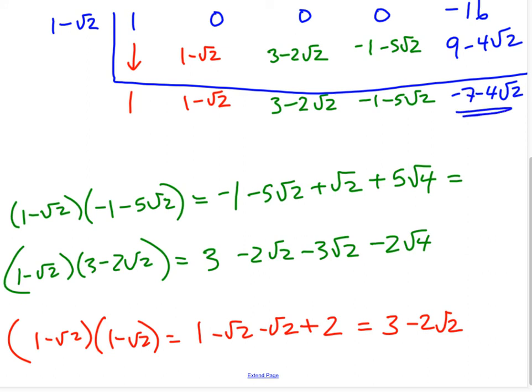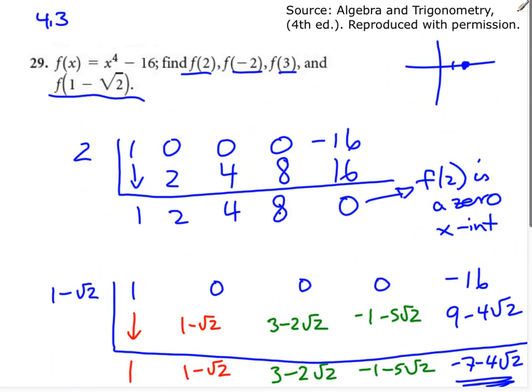So this here would be your remainder. Interesting kind of question where you have a 0 or a function value that you're trying to plug in that isn't just a normal number, it's actually a binomial that includes a radical. Nasty look, loved it.